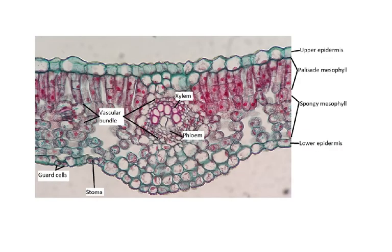It's important to also look at photomicrographs, as the syllabus requires you to label these. You can see a photomicrograph beautifully labeled with upper epidermis, palisade mesophyll, spongy mesophyll, lower epidermis, xylem, phloem, vascular bundle, guard cells, and stoma.